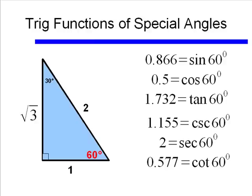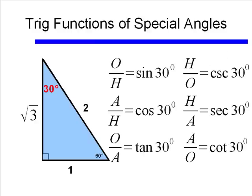Here are the approximations for sine, cosine, tangent, cosecant, secant, and cotangent of 60 degrees. Looking at 30 degrees, we can see that our opposite and adjacent sides are now going to be different. The side opposite 30 degrees is now 1, and the side adjacent to 30 degrees is square root of 3.